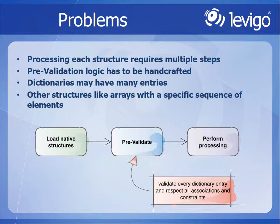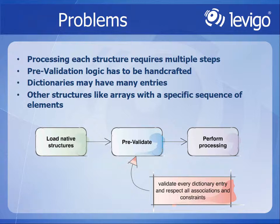If we have a look at how we personally do the processing in our viewer: we load the native data structures — we have a lexer, we have a parser, we get the low-level data structures out of it, meaning name objects, arrays, dictionaries, and things like that. Then we look into these native low-level data structures to extract the content and information to do the further processing — to actually display what is inside the document. To do this, we have to do some kind of pre-validation: at runtime, in the moment we need it, we check if these entries are in the shape we are expecting them to be.